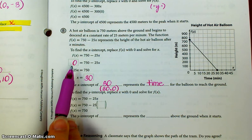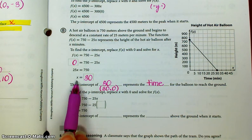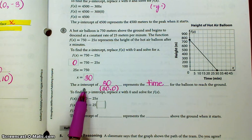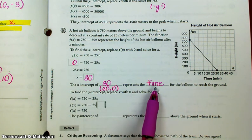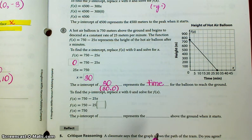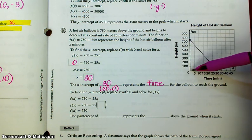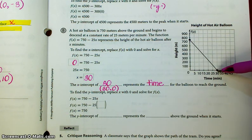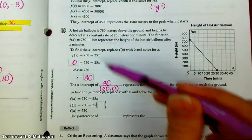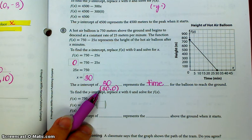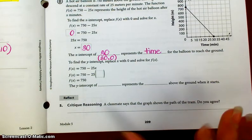So we replace f(x) with 0, we solve for x, and we get 30. So the x-intercept of 30 represents the time for the balloon to reach the ground. Because if the balloon has reached the ground, then its height is now 0. And when its height is 0, that means 30 minutes has gone by, according to what we just solved for. If you want the ordered pair for the x-intercept, it's right there. Okay, let's find the y-intercept.